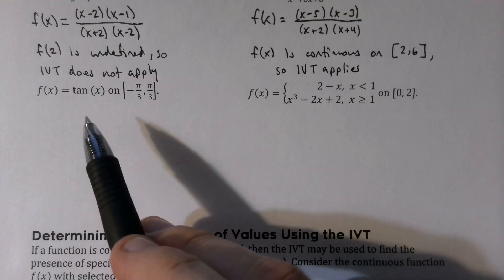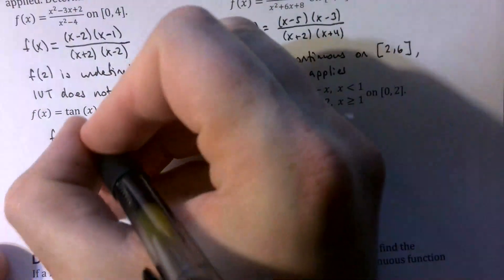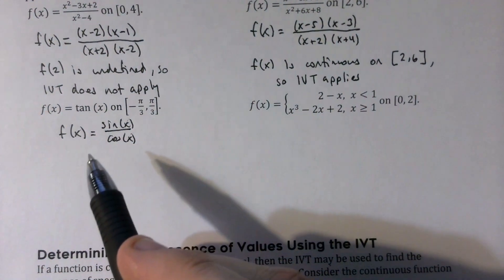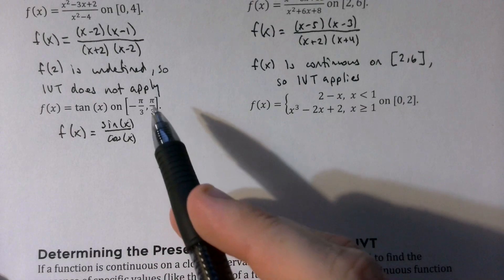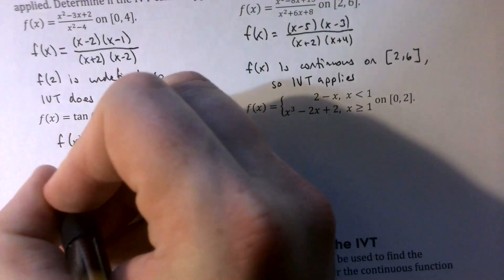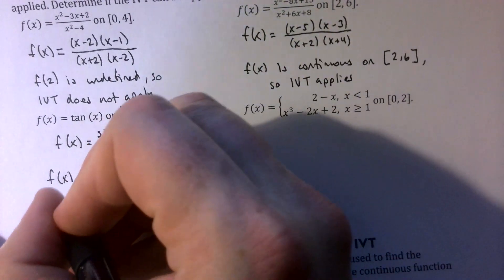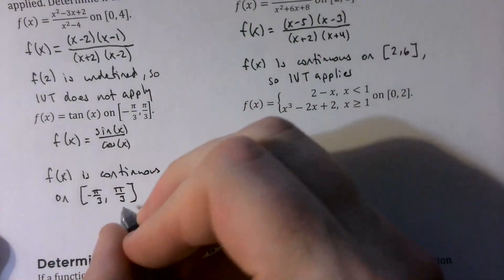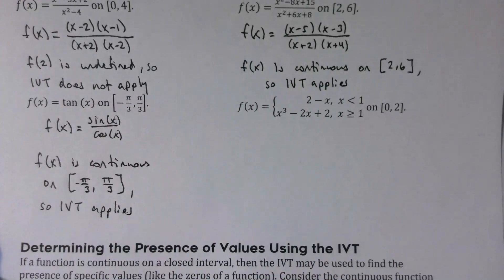For f(x) = tan(x), thinking of it as sin(x)/cos(x), it's undefined wherever cos(x) = 0, which occurs at ±π/2. Both of those are outside of the interval [−π/3, π/3]. So very similar to the previous example, the function is continuous on [−π/3, π/3], and therefore the IVT applies.